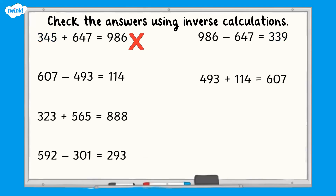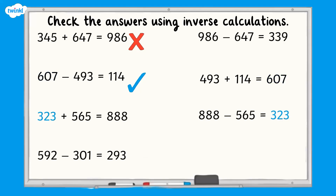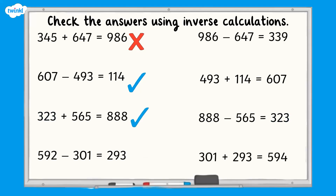493 add 114 equals 607, which matches, so the addition calculation is correct. 888 subtract 565 equals 323, which matches, so the addition calculation is correct. 301 add 293 equals 594, which does not match 592, so the addition calculation is wrong.